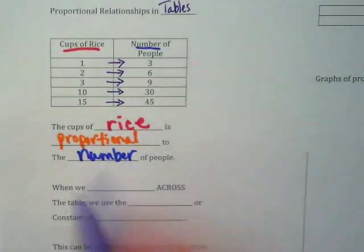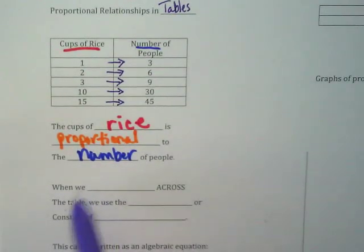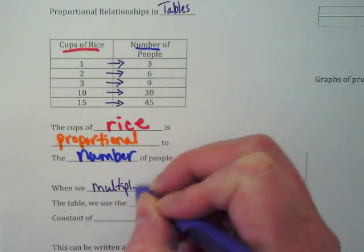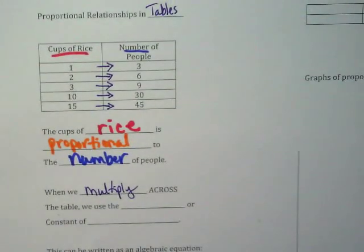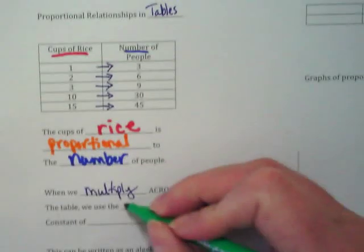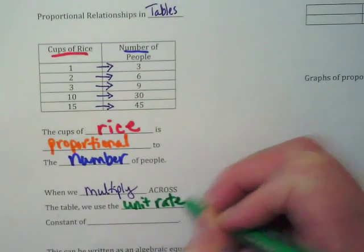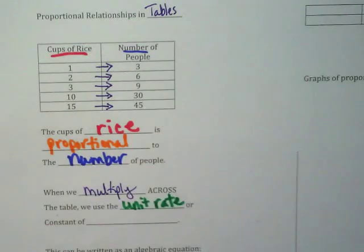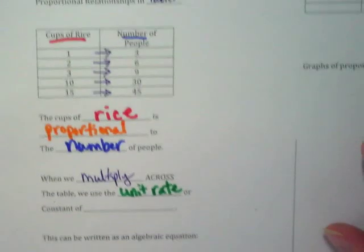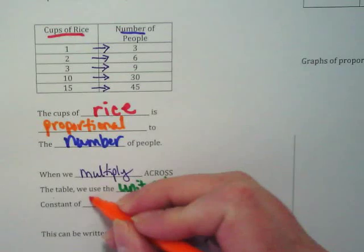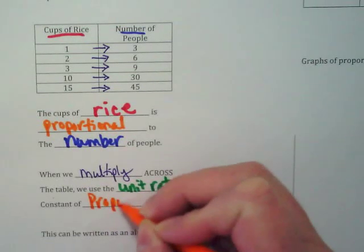So using your pencil, we're going to start this sentence here. When we multiply across the table, we use the, in green, unit rate, or constant of proportionality.